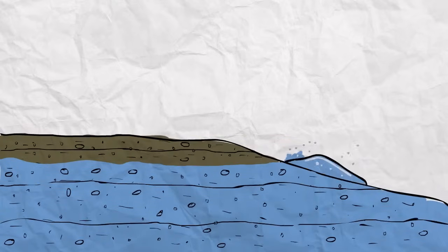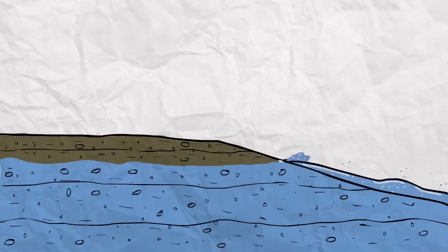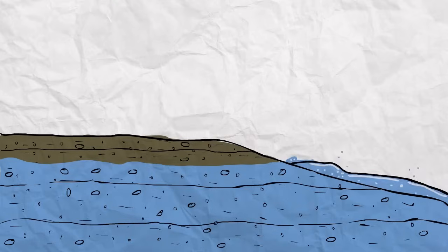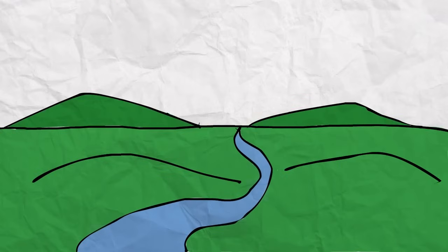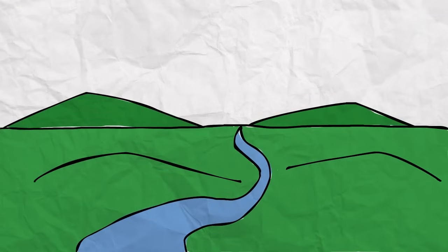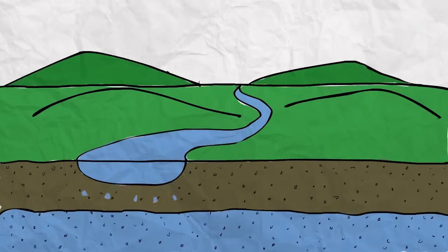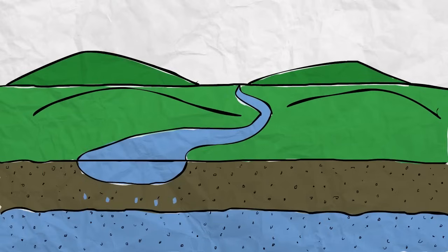Groundwater can also pour down a sloping surface, creating streams. Any place where groundwater flows out into the surface is called a spring. Surface water can also become groundwater. If a body of surface water flows above the water table, water can seep down through the sediment and help fill the aquifer.